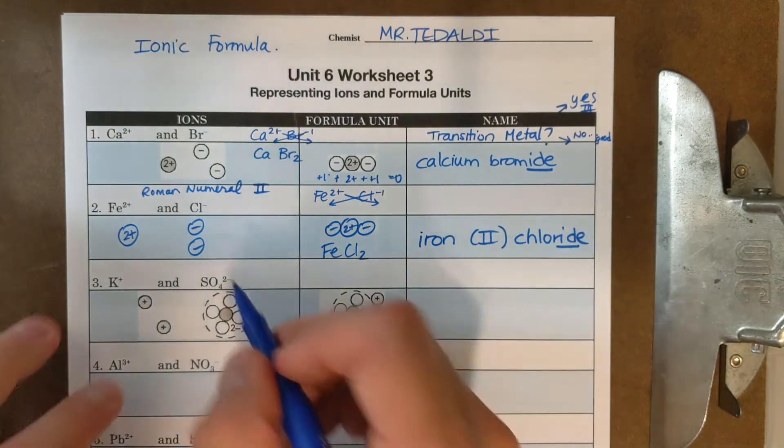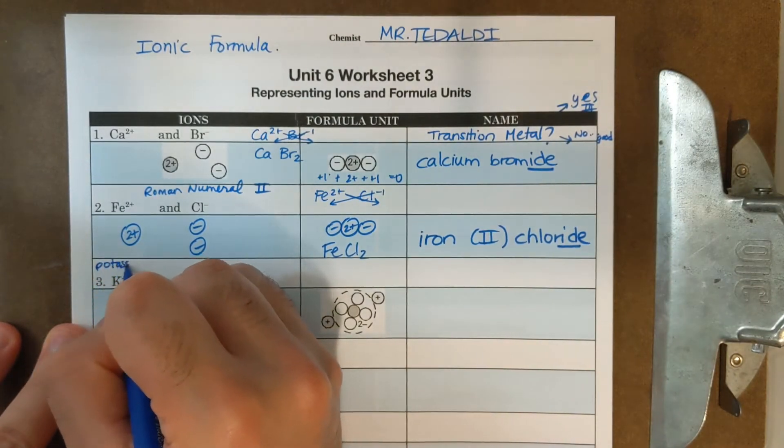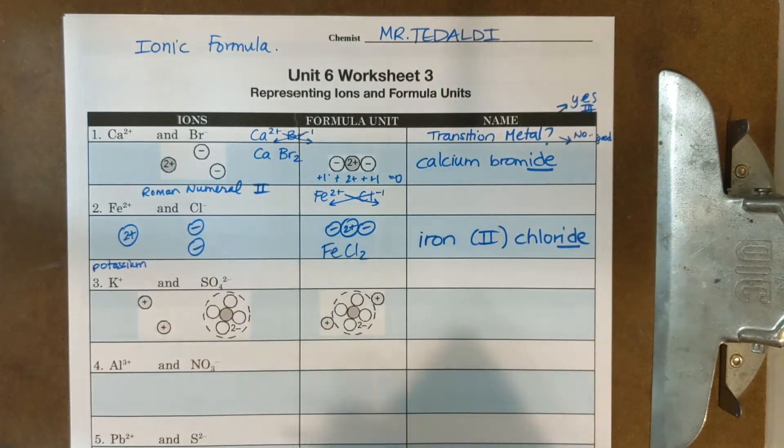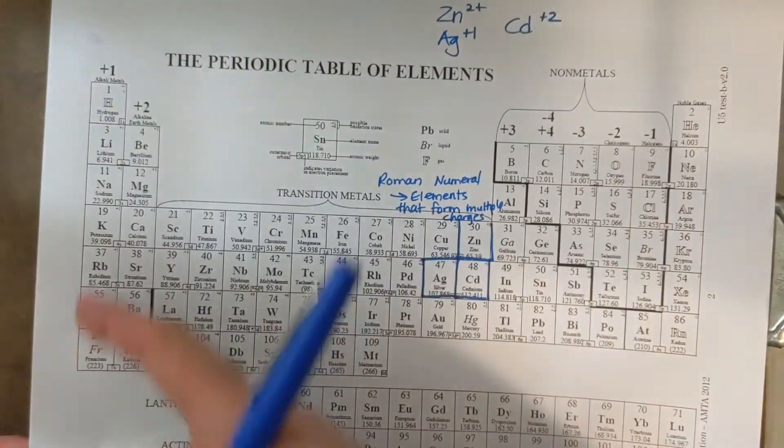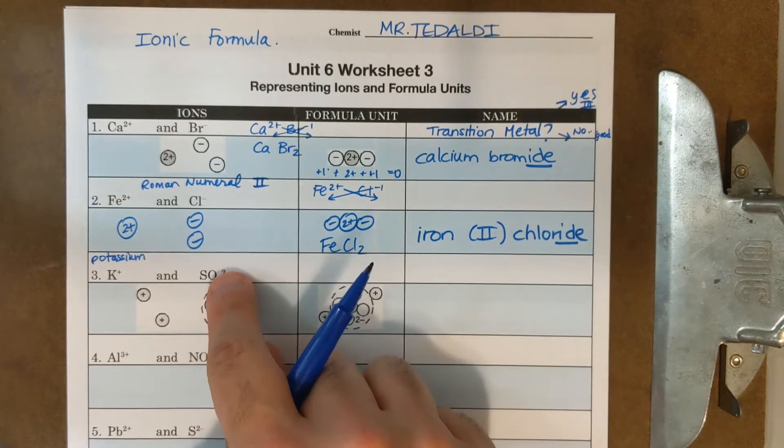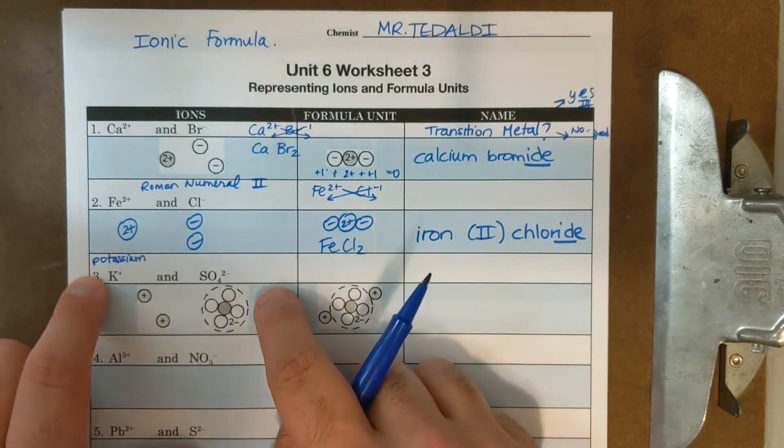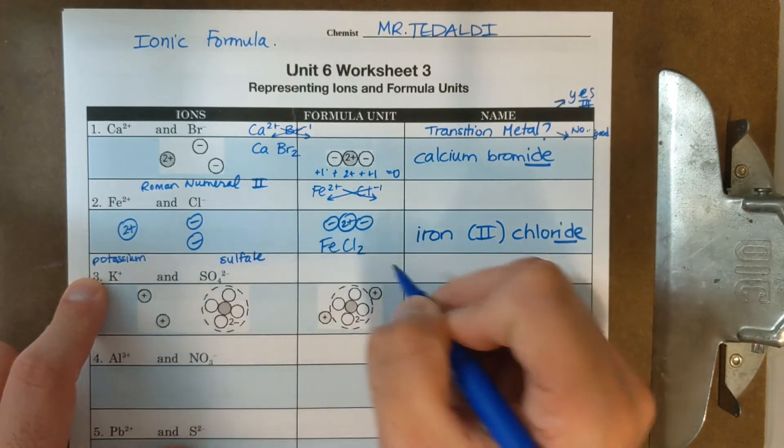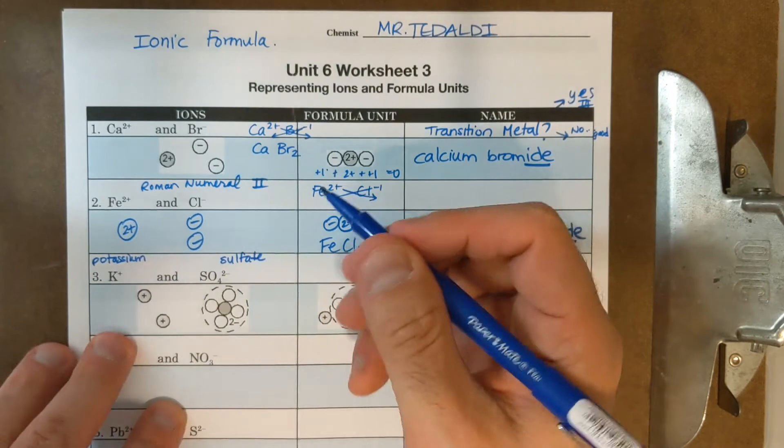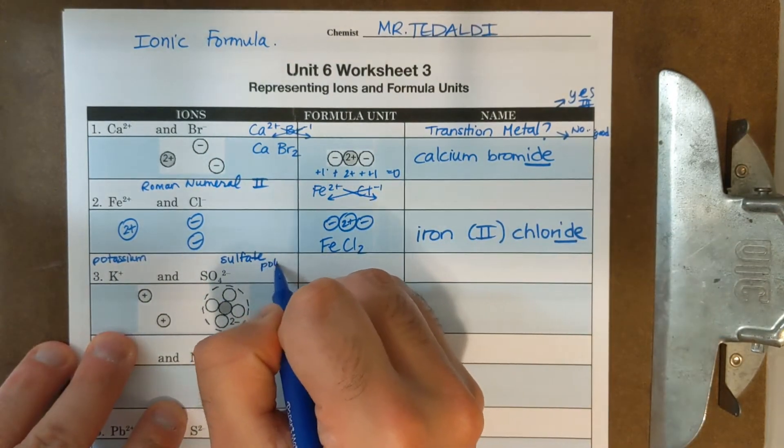This is potassium K plus. And if I look on the periodic table, I'm going to ask myself the question, is it a transition metal? Nope. It's in group one. So later on, I'm not going to need a Roman numeral. So four two minus, look, I'm going to have multiple atoms here. This is sulfate. It's a polyatomic ion. And it's going to be one of the polyatomic ions you're going to have to memorize. This is polyatomic.